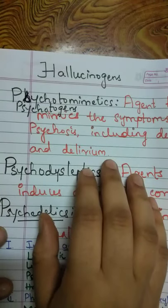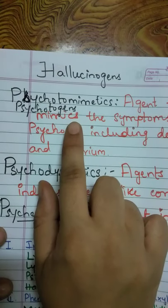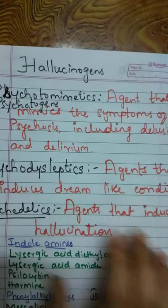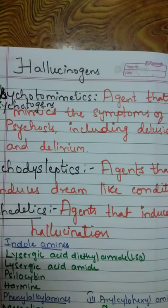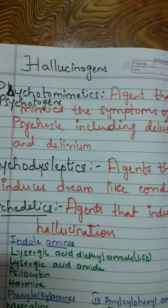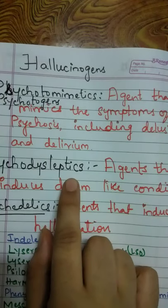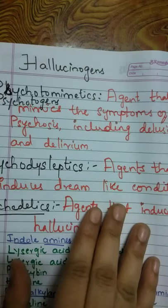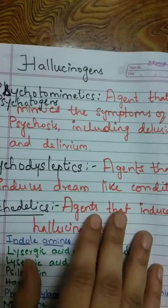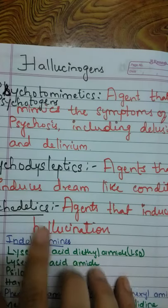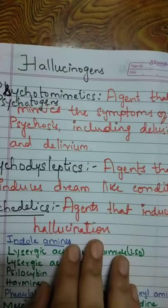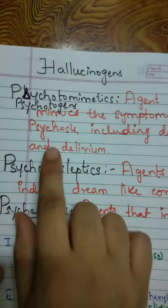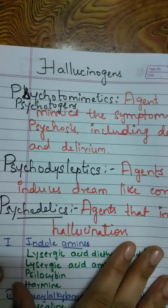Psychomimetics or psychotogens are agents that produce a psychosis-like action, such as delusions and delirium. Psychodysleptics are agents that induce a dreamlike condition. Psychedelics also produce hallucinations. All these terms are simply synonyms for hallucinogens.